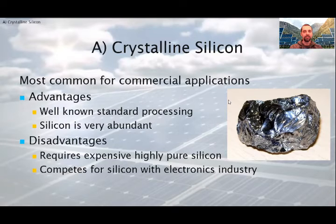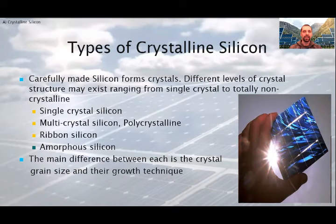These are, it requires expensive, highly pure silicon and competes for silicon with electronics industry. On this slide, you can see the types of crystalline silicon. Carefully made silicon forms crystals. Different levels of crystal structure may exist ranging from single crystal to totally non-crystalline. The different types of silicon cells are single-crystal silicon, multi- or poly-crystal silicon, ribbon silicon and finally the amorphous silicon, which is marked with green dot to indicate that actually it is a silicon based thin film technology. The main difference between each type is the crystal grain size and their growth technique.